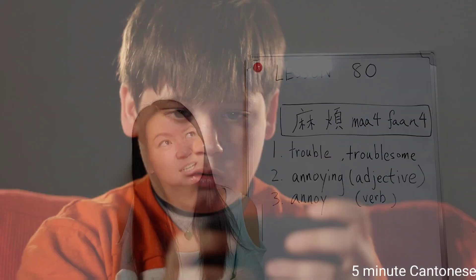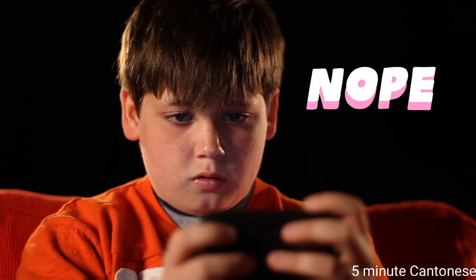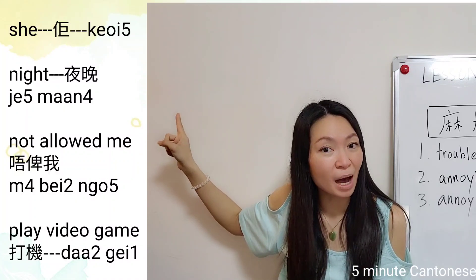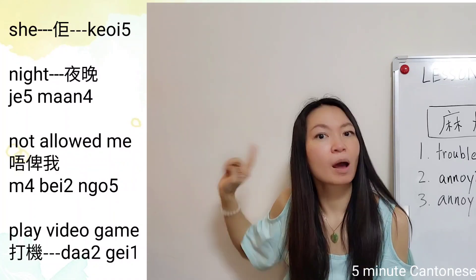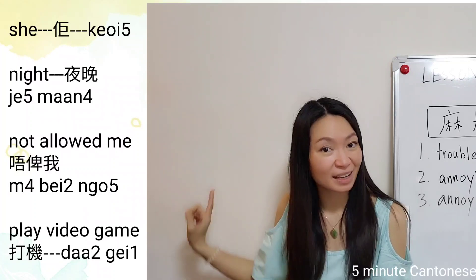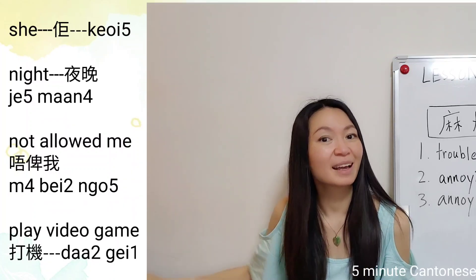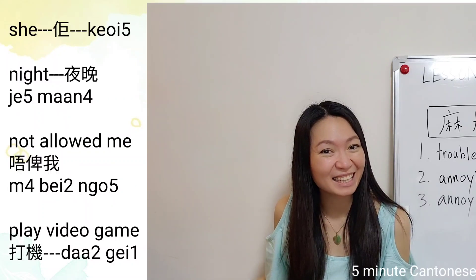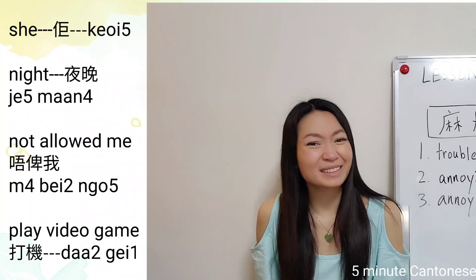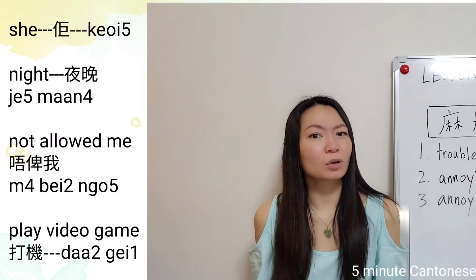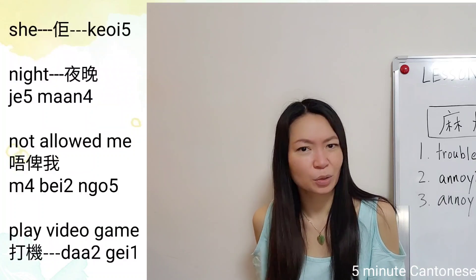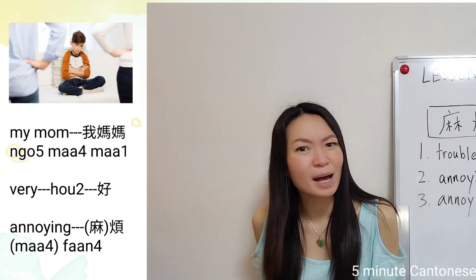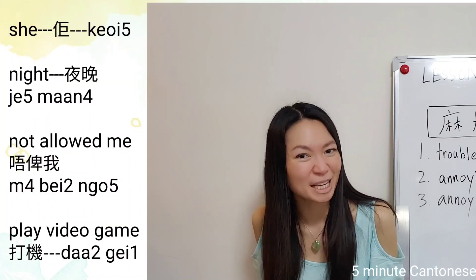Why is she annoying? She doesn't allow me to play video games at night. In Cantonese: 她夜晚唔比我打機。 So the full sentence is: 我媽媽好麻煩，她夜晚唔比我打機。 Or you can drop 麻: 我媽媽好煩，她夜晚唔比我打機。